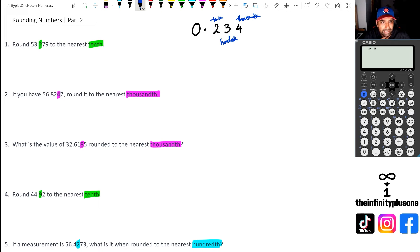So if that's the case, we've got rounding 53.279 to the nearest tenth. Just like how we did in part one of the series, we're going to look at the number right after the highlighted number. In this case, it is seven, which is above five. So we're going to round this number up. The answer for this question is 53.3.